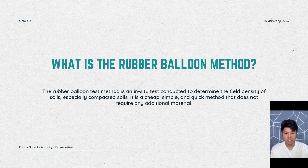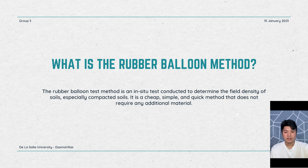The rubber balloon method is based on the difference in buoyant force between a rubber ball and water. The rubber ball has a small airspace inside that gives it less buoyancy than water and therefore floats. If you put the rubber ball in a container of water, it sinks to the bottom. The buoyant force keeps the rubber ball afloat at all times because it is never submerged. In a similar fashion, soil has an airspace inside that gives it low buoyancy, meaning that when soil is wet, it sinks to the bottom.